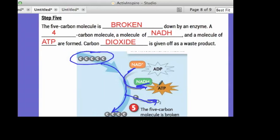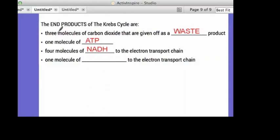You have to know that how many phosphates does an ATP have? Three molecules of carbon dioxide are given off as a waste product. One molecule of ATP is given off. Four molecules of NADH to the electron transport chain. And one molecule of FADH2. Or I mean, not squared. To the second. That's an F. It's FADH2. That's that one. If you can't read it. The last one is FADH2.